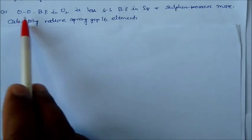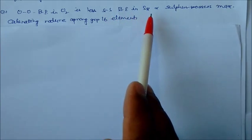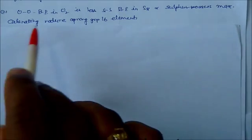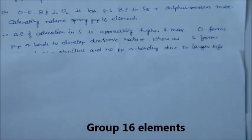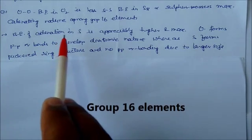In oxygen, the O-O bond energy is less than the sulfur-sulfur bond energy. Sulfur possesses maximum catenating nature among the Group 16 elements. Bond energy of catenation in sulfur is appreciably higher and maximum.